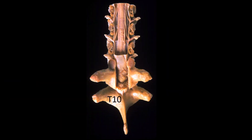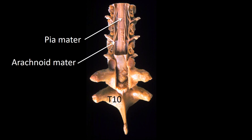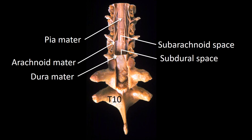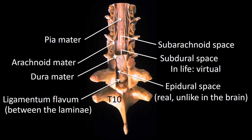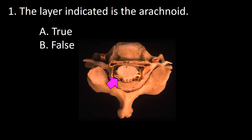This is another specimen of a spinal cord, the lower vertebra being T10. You can see the pia, the arachnoid, the subarachnoid space, the dura, and the subdural space, which in life is a virtual space. Outside the dura we have the epidural space, which is a real space, and in the dorsal aspect of the canal, the ligamentum flavum. So the answer to this question is true.